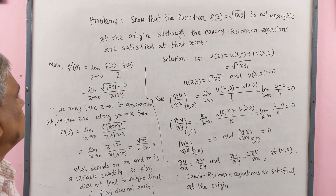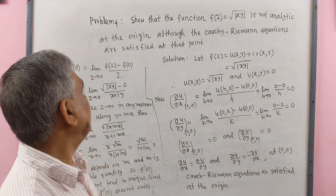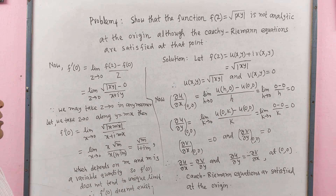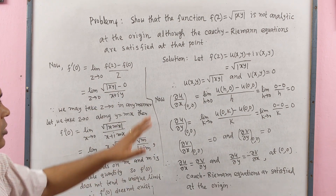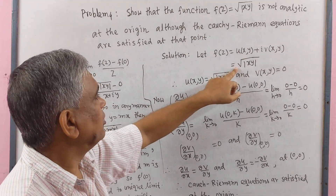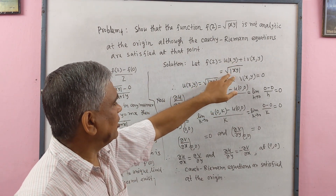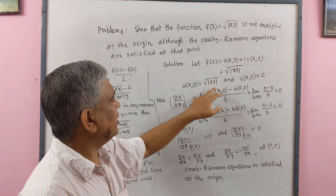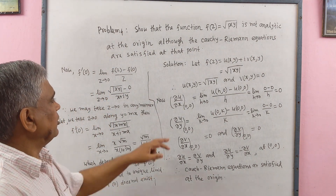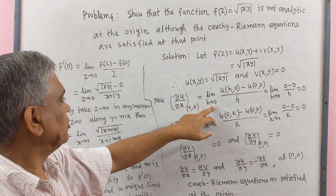Now we solve Problem 4: Show that f(z) = √|xy| is not analytic at the origin, although the Cauchy-Riemann equations are satisfied at that point. Let f(z) = u(x,y) + iv(x,y). Since f(z) = √|xy|, the real part is u(x,y) = √|xy| and the imaginary part is v(x,y) = 0.